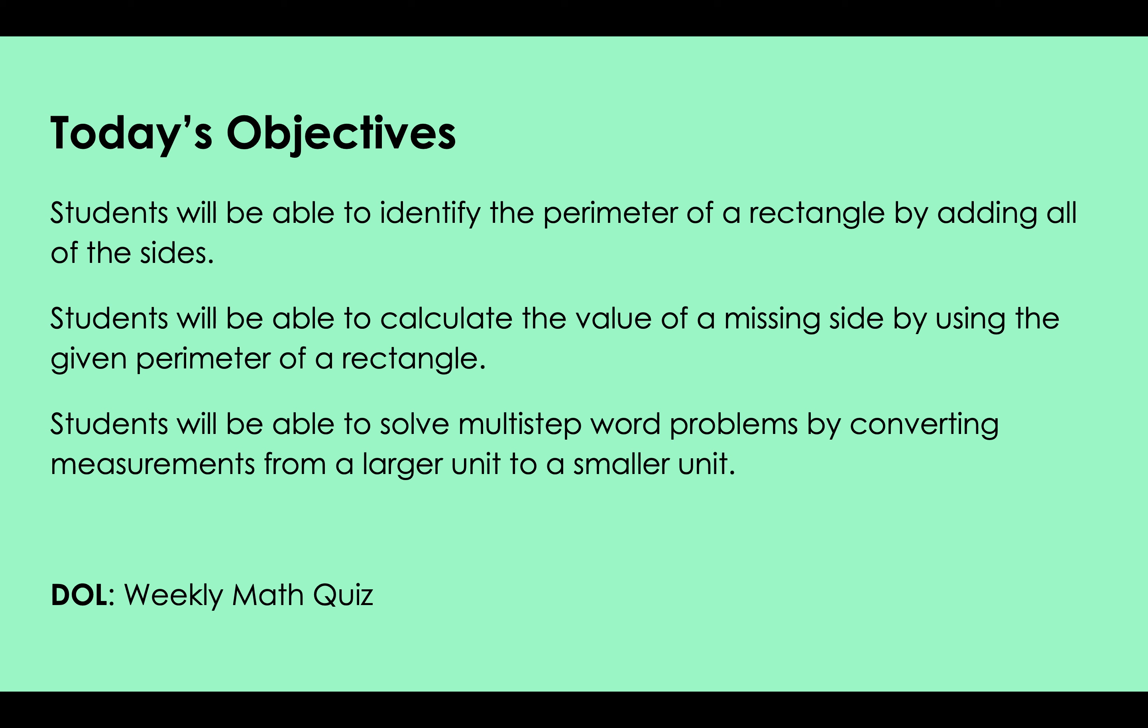Today's objectives: Students will be able to identify the perimeter of a rectangle by adding all of the sides. Students will be able to calculate the value of a missing side by using the given perimeter of a rectangle. Students will be able to solve multi-step word problems by converting measurements from a larger unit to a smaller unit. And your DOL is a weekly math quiz that we have on Fridays.